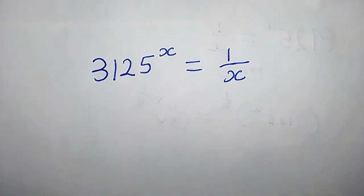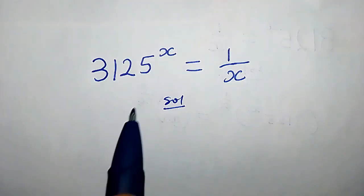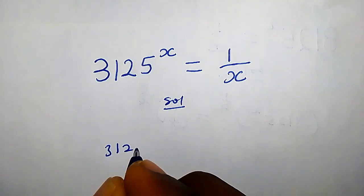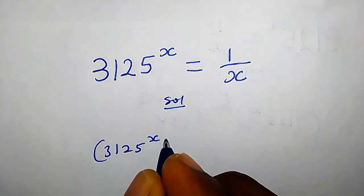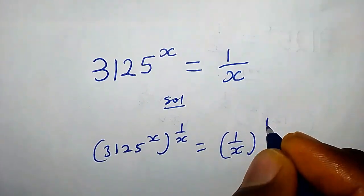How do we solve for x in this nice exponential equation? Solution: let's multiply both powers by 1 over x, so we get 3125 raised by x times 1 over x equals 1 over x raised by 1 over x.